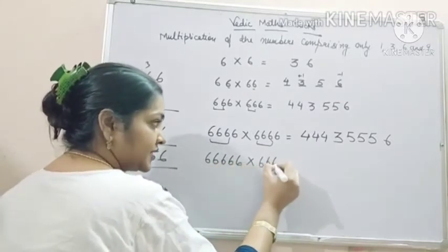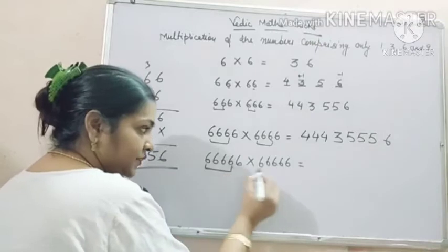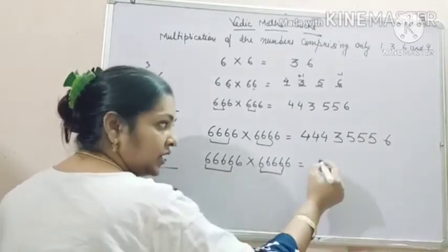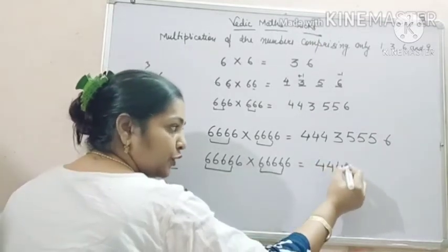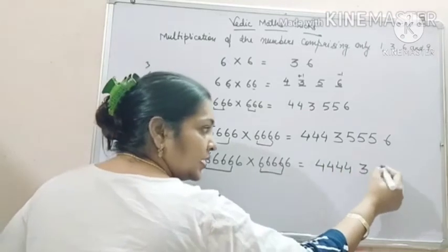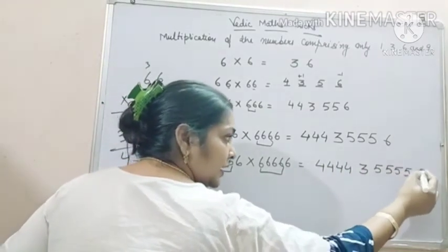5 sixes. For these 4 sixes, you will write 4444, 355556, and then 6.